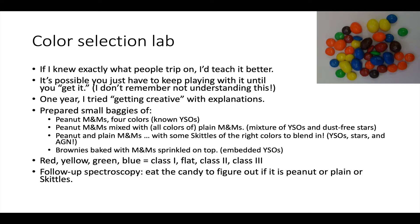I prepared small baggies of peanut M&Ms with four different colors — that bag is our set of known young stars. Then I had another baggie with peanut M&Ms mixed with plain M&Ms, calling that a mixture of young stars and dust-free stars. Peanut M&Ms come in a variety of shapes: some are clearly peanut, some are smaller peanuts that are harder to distinguish, and some are edge-on — hard to tell if it's a peanut or an edge-on plain.